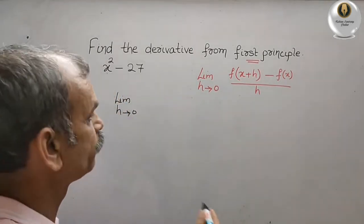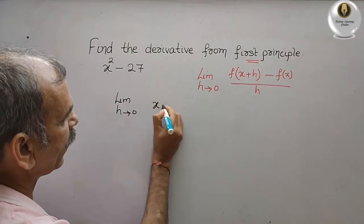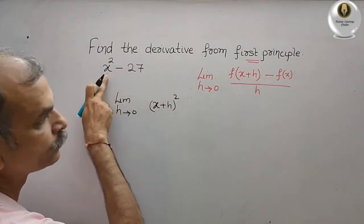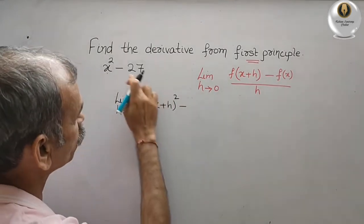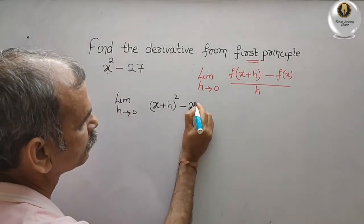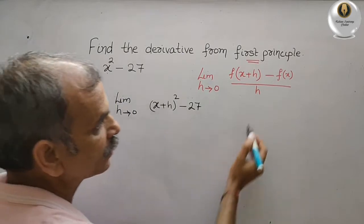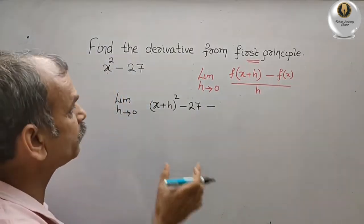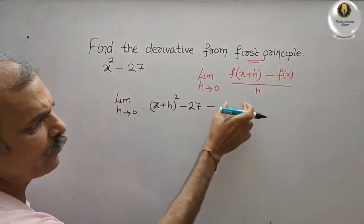So we will write that only: x plus h whole squared minus 27. Again is minus, and here they have written f of x. That means what they have given, just we have to write here.